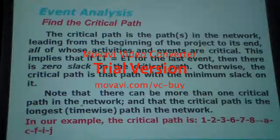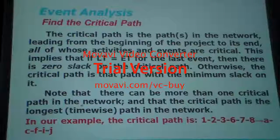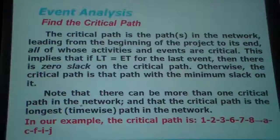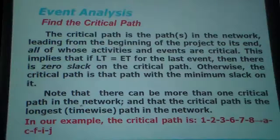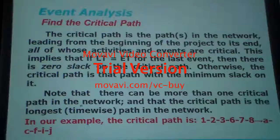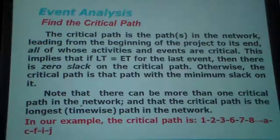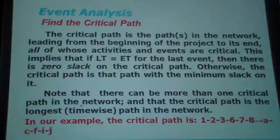If we add one unit, then the whole project has to be stopped. However, the non-critical path — if you delay it, it will not affect the critical path or the total time of the project. The critical path is that path with the minimum slack on it — it should be no slack. But if there is some delay, it will be minimum slack. Note that there can be more than one critical path. For big networks and projects, there may be more, but the critical path is the longest time-wise path in the network. In our example, the critical path goes through events 1-2-3-6-7-8, and activities A, C, F, I — that is A to C to F to I.